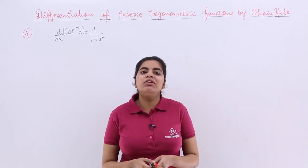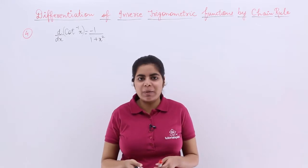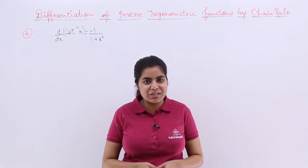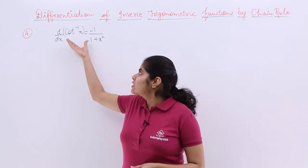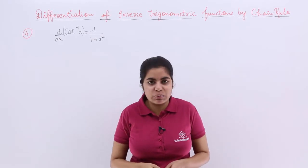In this video, let's see the differentiation of cot inverse x with respect to x. The formula for differentiation of cot inverse x with respect to x is d/dx of cot inverse x, that means the differentiation is minus 1 upon 1 plus x square.